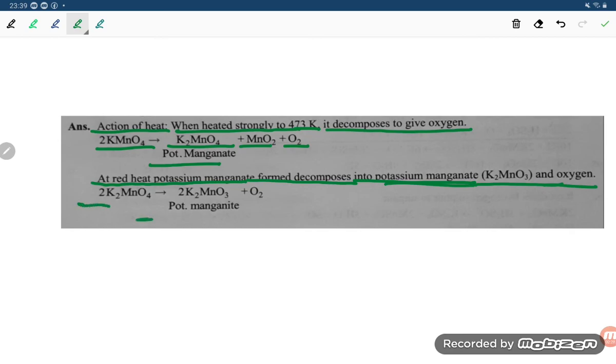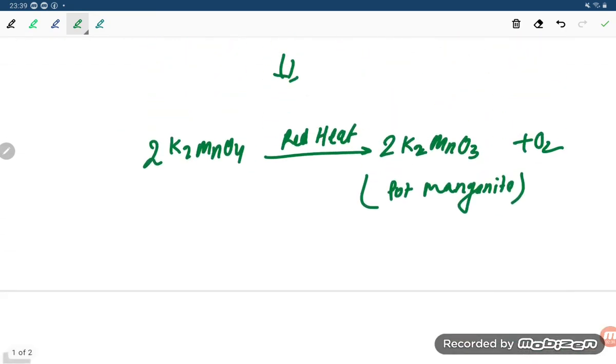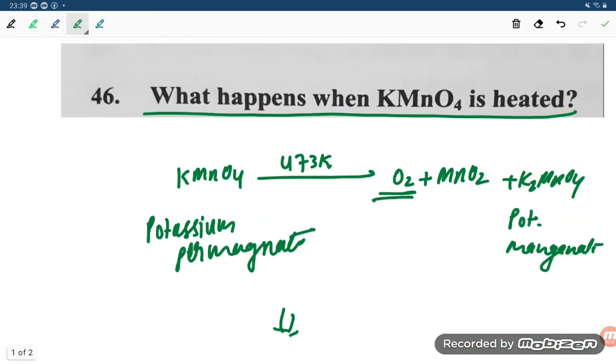If you are heating potassium permanganate, it will give dioxygen. This is our required answer. Thank you so much for watching.